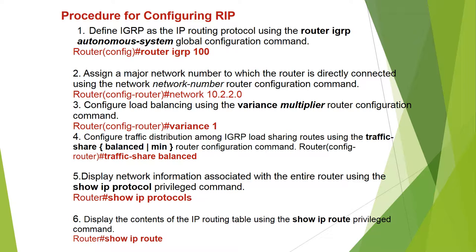Configure load balancing using the 'variance multiplier' router configuration command — Router(config-router)# variance 1. Configure traffic distribution among IGRP load-sharing routes using the 'traffic-share' variance command. Display network information associated with the entire router using the 'show ip protocol' privileged command.